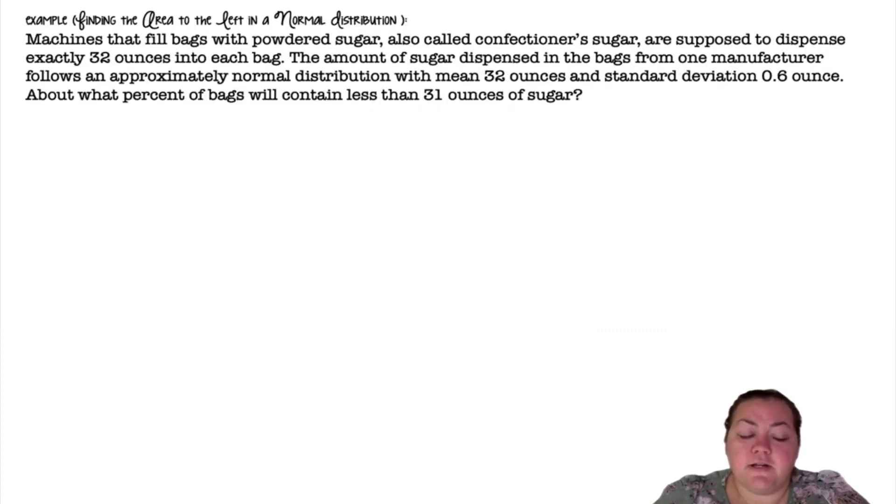Finding the area to the left in a normal distribution. Machines that fill bags with powdered sugar, also known as confectioner's sugar, are supposed to dispense exactly 32 ounces into each bag. The amount of sugar dispensed in the bags from one manufacturer follows an approximately normal distribution with a mean of 32 ounces and a standard deviation of 0.6 ounces. About what percent of the bags will contain less than 31 ounces of sugar?